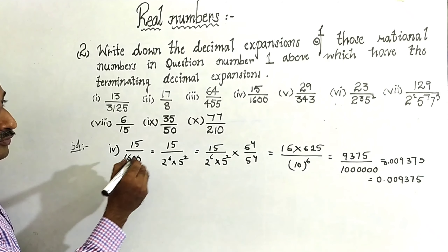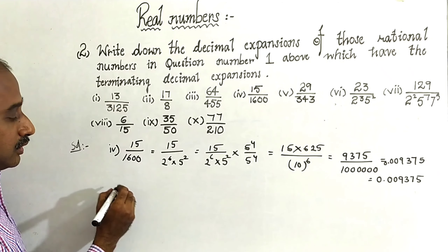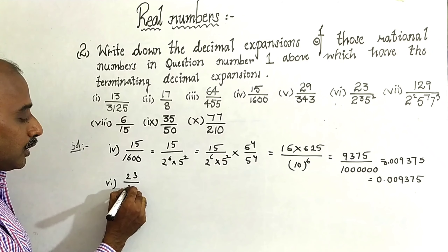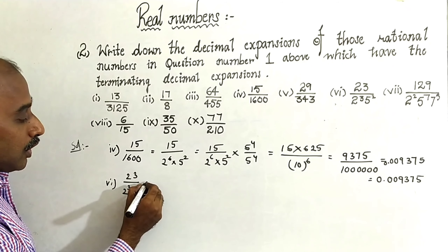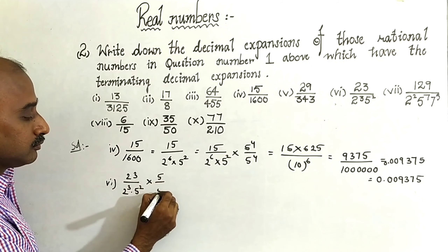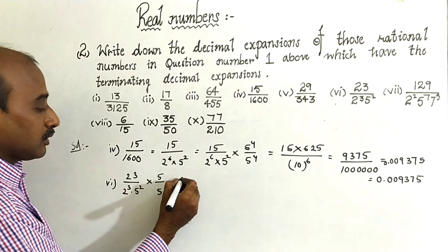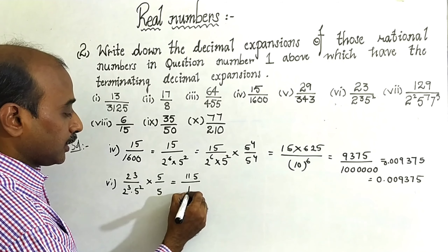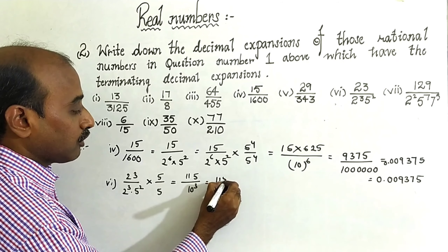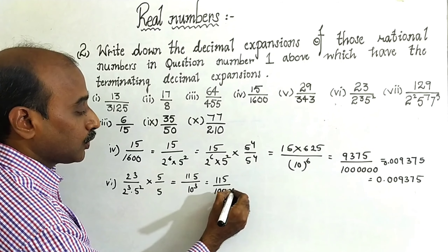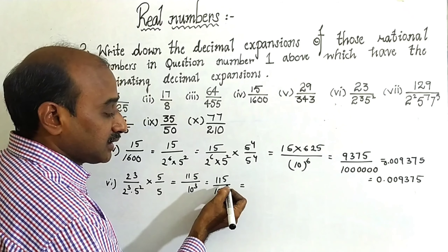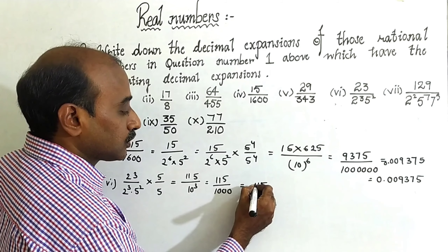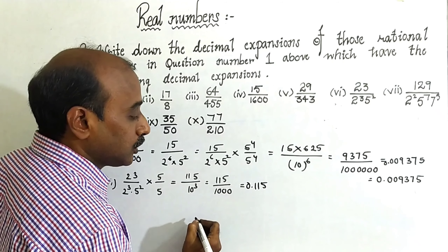Come to next. Fifth one we already know is a non-terminating decimal. Come to sixth one: 23 by 2 cubed into 5 squared. This gives 115 by 1000. Now take the decimal after three digits from right to left — one, two, three — giving decimal point zero. So this is 0.115.